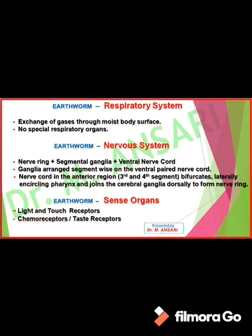The respiratory system of earthworm has no special organ. Exchange of gases takes place directly through the moist body surface. The nervous system of earthworm is ganglionate, consisting of a nerve ring, segmental ganglia, and a double ventral nerve cord. Ganglia are arranged segment-wise on the ventral paired nerve cord. The nerve cord at segments 3rd and 4th bifurcates laterally, encircling the pharynx and joining cerebral ganglia dorsally to form the nerve ring. The cerebral ganglia act as the brain of the earthworm. Sense organs include light and touch receptors and chemoreceptors, which are used for detection of decaying leaves.